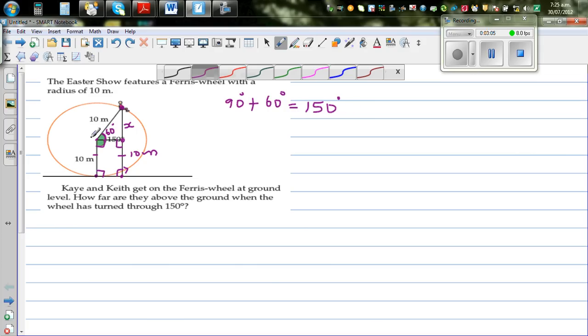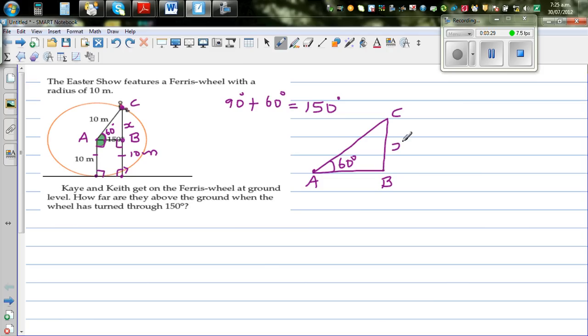Okay, so I'm drawing—my focus is triangle A, B, C. Let me draw the triangle away so that you can see. This is A, B, C. So this is A, this is B, and this is C. This angle is 60, and this is X, and this is 10 meters. So if you find X, 10 plus X would be the height of Kay or Keith when they have traveled 150 degrees. So let's find X.